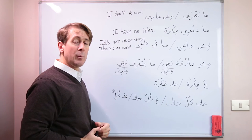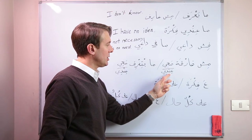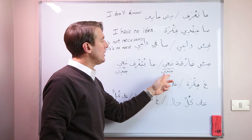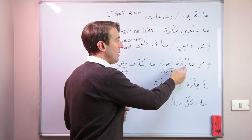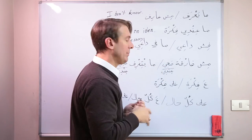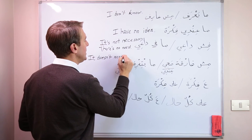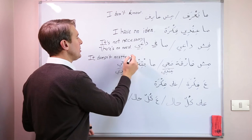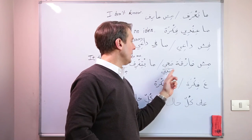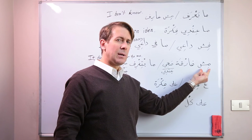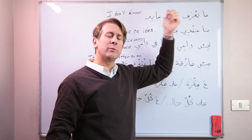The next phrase is 'mish farga mai' or 'mish farga 'andi' — meaning 'it doesn't matter to me.' You can also talk about someone else: 'mish farga' meaning it doesn't matter to him. The 'mish' here is a negation. You can use the preposition 'mai' or ''andi' interchangeably. The masculine form would be 'mish fariq mai' or 'map bifrig mai.'